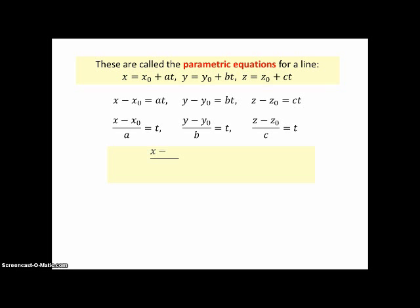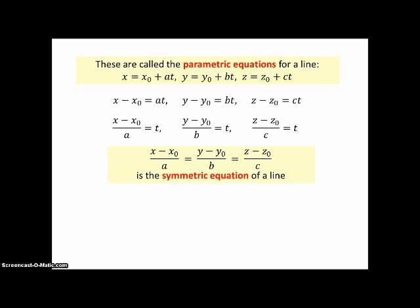Now, if we solve for T in each of these equations by first moving the X0, Y0, Z0 to the other side, and then dividing by the components of the V vector, we can solve for T. Now, if T equals all three of these, then all three of these are equal. And this is called the symmetric equation of a line. I kind of argue with the symmetric equation, because it really is more than one equation.